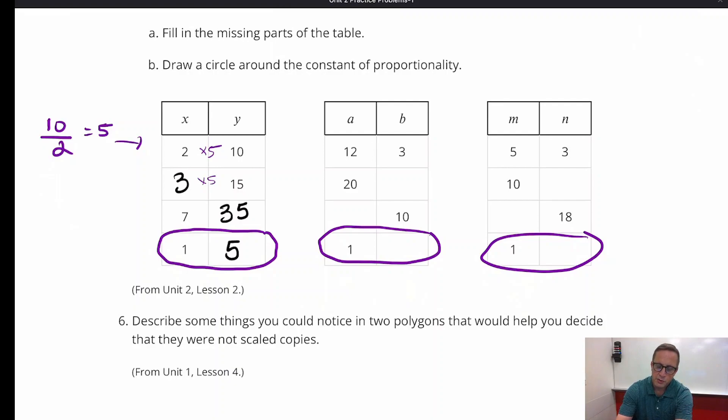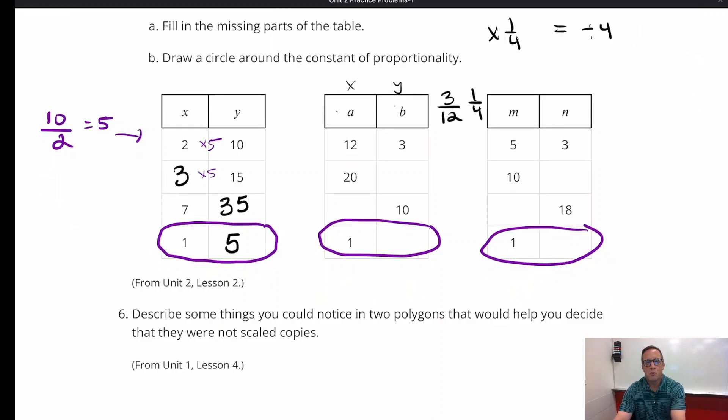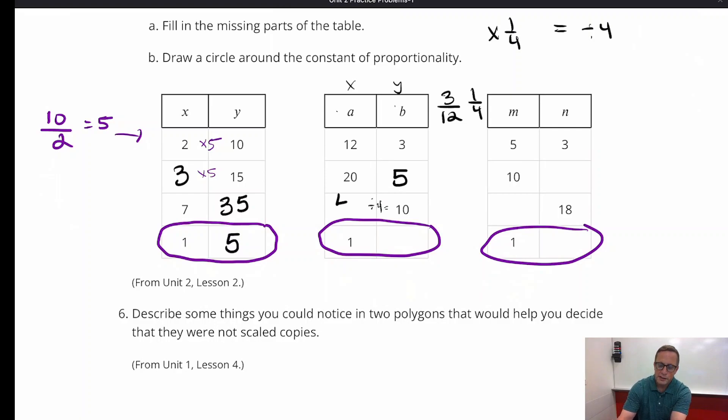Alright, on this one right here, I know this is a and b, but really it's x and y. And so you're going to do 3 divided by 12, which is 1 fourth. So multiplying by 1 fourth is like dividing by 4, right? Multiplying by 1 fourth is the same thing as dividing by 4. So let's do it that way. So 20 divided by 4 is 5. Right there. And then what divided by 4 equals 10? Well, 40 divided by 4 is 10. And then 1 is going to be 1 fourth. There you go. So so far we've got two of our constants of proportionality.